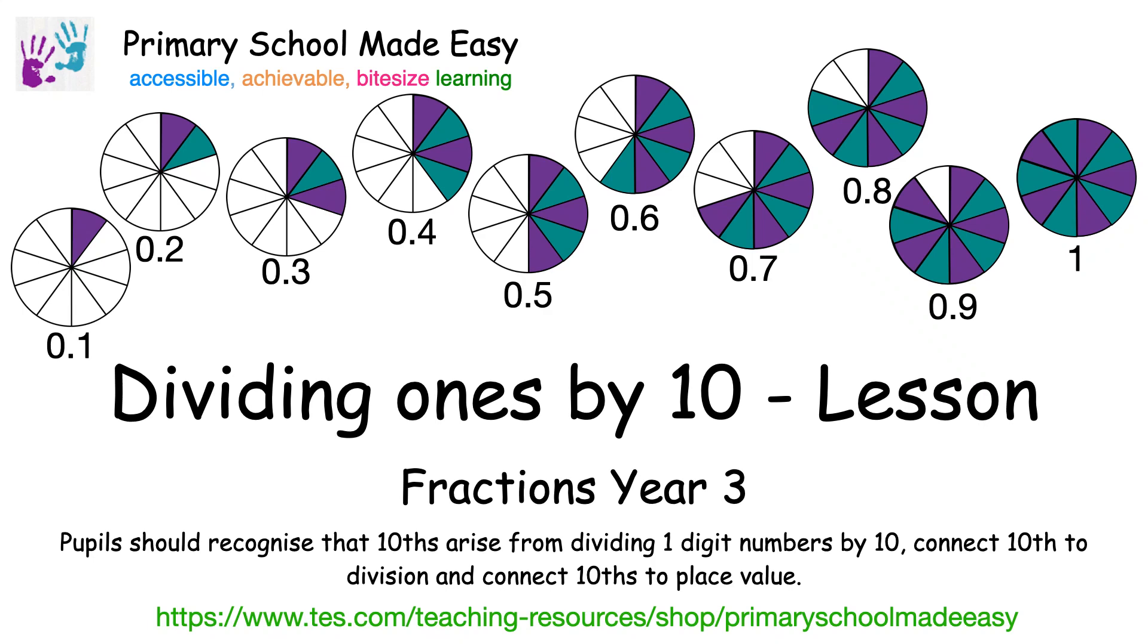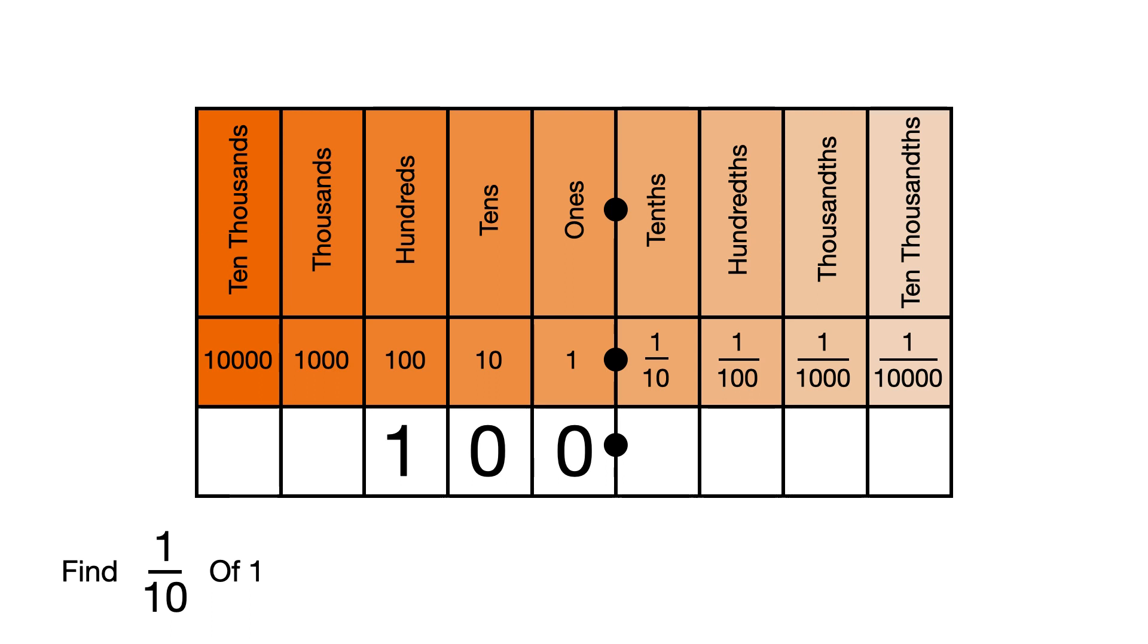Dividing 1s by 10. If we chop the number 1 into 10 equal pieces, each piece is going to be less than 1. We can see this using the place value chart. Every time we move a digit one place to the right, we are dividing by 10.